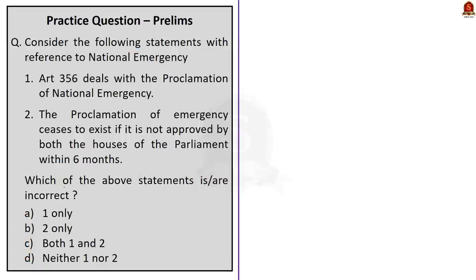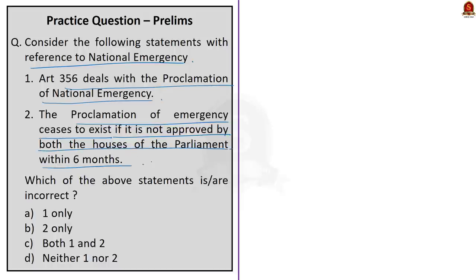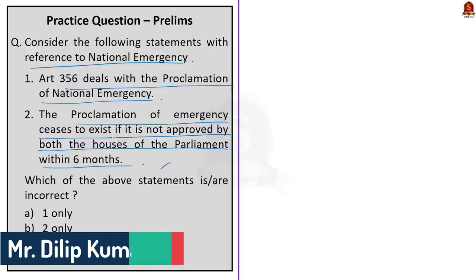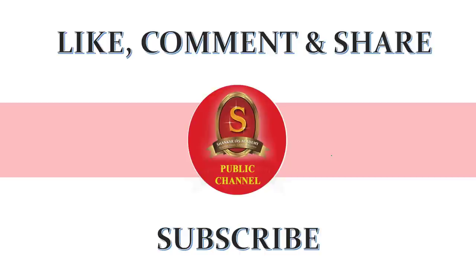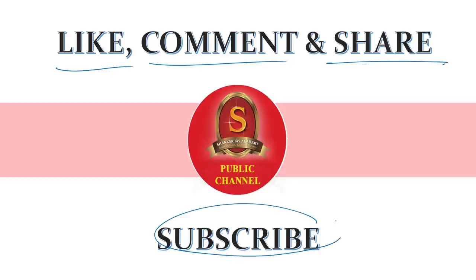Question 3: Consider the following statements with reference to national emergency. Statement 1: Article 356 deals with the proclamation of national emergency. Statement 2: The proclamation of emergency ceases to exist if not approved by both houses of parliament within six months. This is an easy question — find the answer and post it in the comment section. If you like the video, hit the like button, post your comments and share the video with your friends. Don't forget to subscribe to Shankar IAS Academy's YouTube channel. Thanks for watching.